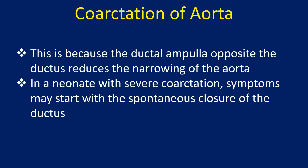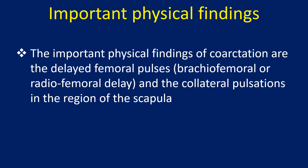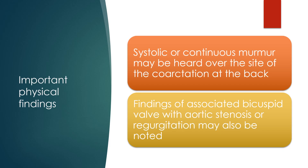In a neonate with severe coarctation, symptoms may start with the spontaneous closure of the ductus. The important physical findings of coarctation of aorta are the delayed femoral pulses, brachiofemoral or radiofemoral delay, and the collateral pulsations in the region of the scapula. Systolic or continuous murmur may be heard over the site of the coarctation at the back.